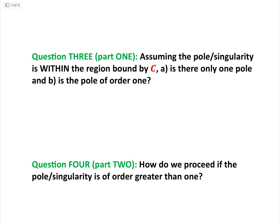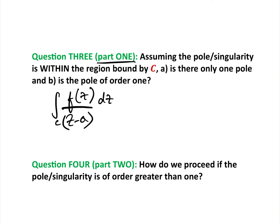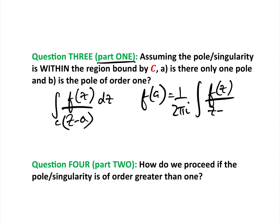Question three — this is what we did in part one — there was a pole or singularity within the region. We had the integral of the form f(z) over (z minus a) dz around a curve where a was within the curve, and we used the Cauchy Integral Formula: f(a) equals 1 over 2πi times the integral of f(z) over (z minus a) dz. That's what we used to solve those in the first video.